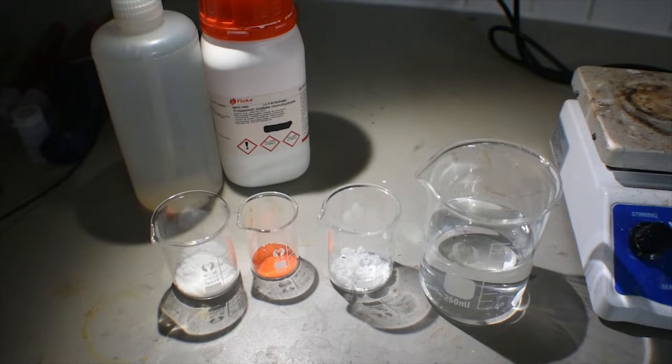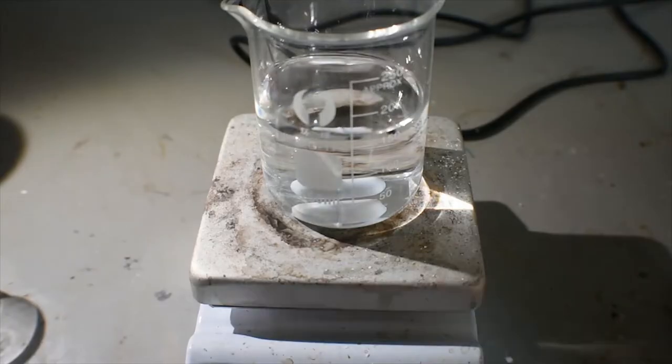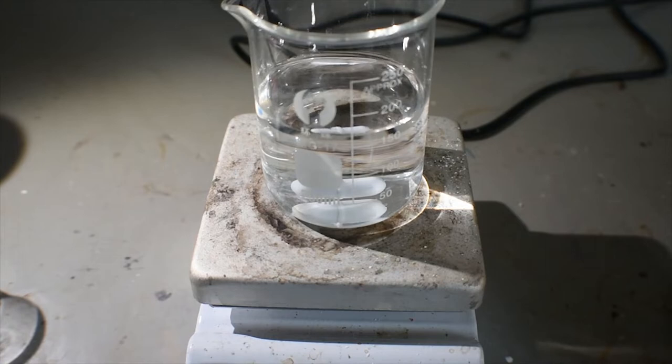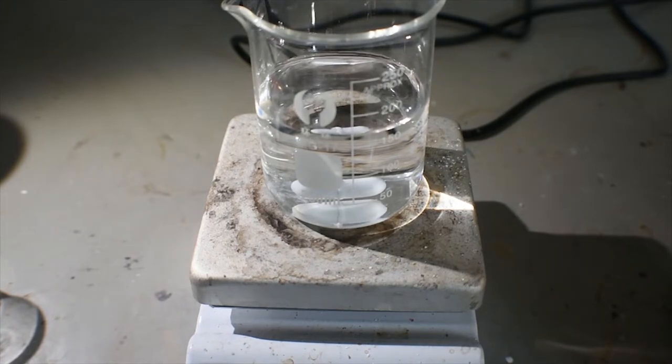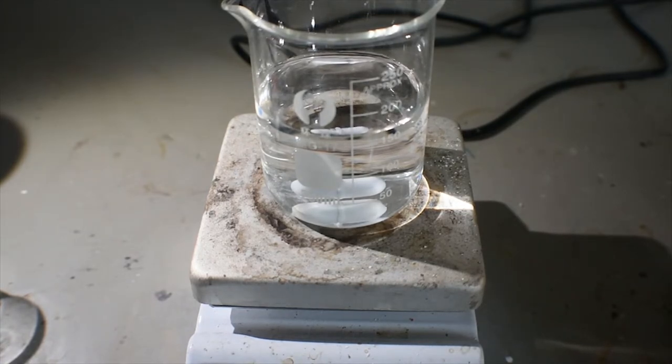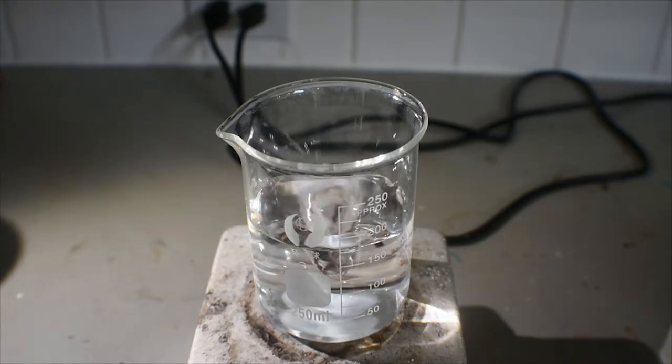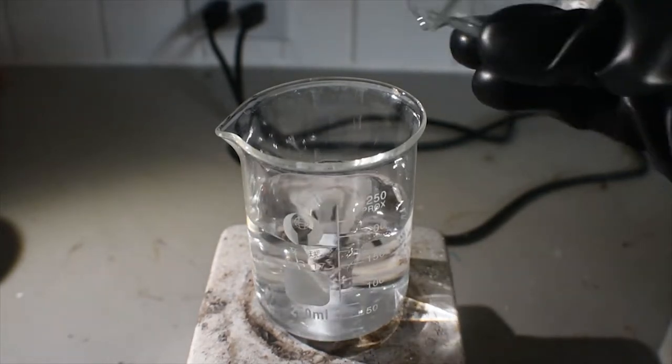This procedure obviously does involve oxalates and hexavalent chromium. With that being said, gloves are recommended. Here I have the 160 milliliters of distilled water with a stir bar. To this, I'm going to dissolve the potassium oxalate and oxalic acid. First, the oxalate.